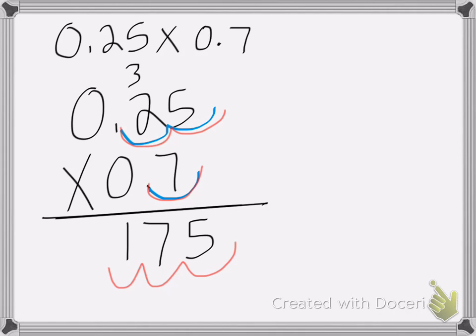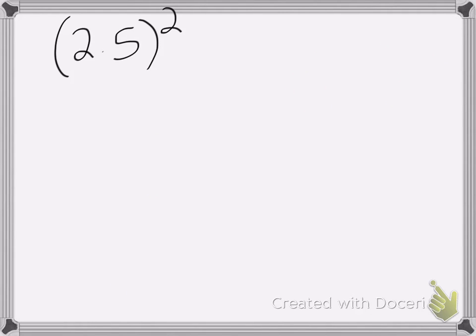So, 1, 2, 3, and this is where my decimal place goes. Your answer is 0.175. If you put the decimal anywhere else, the answer will be wrong.